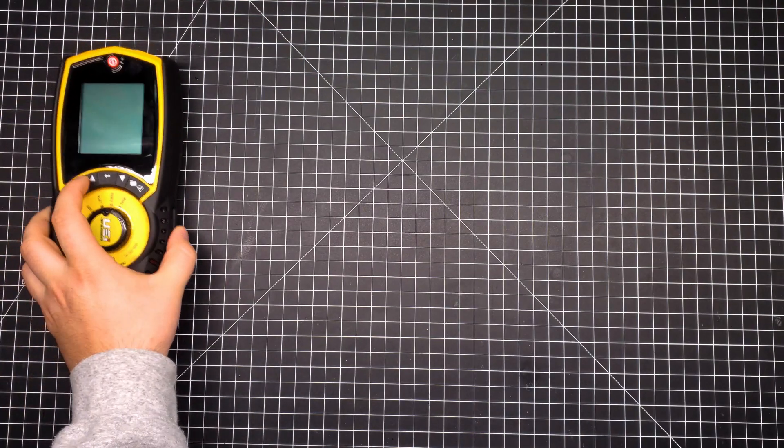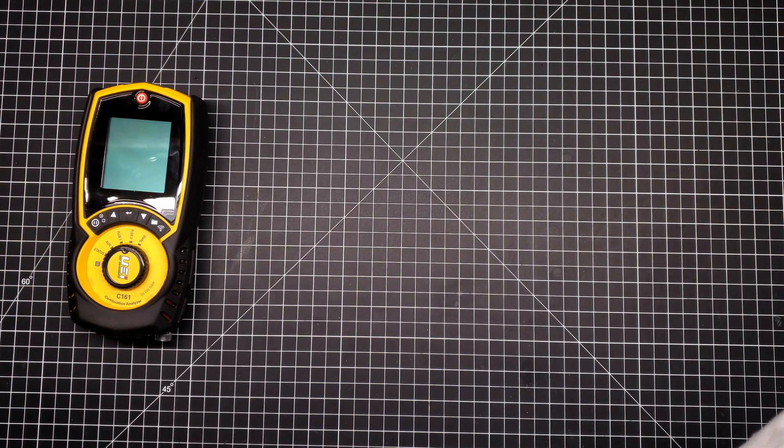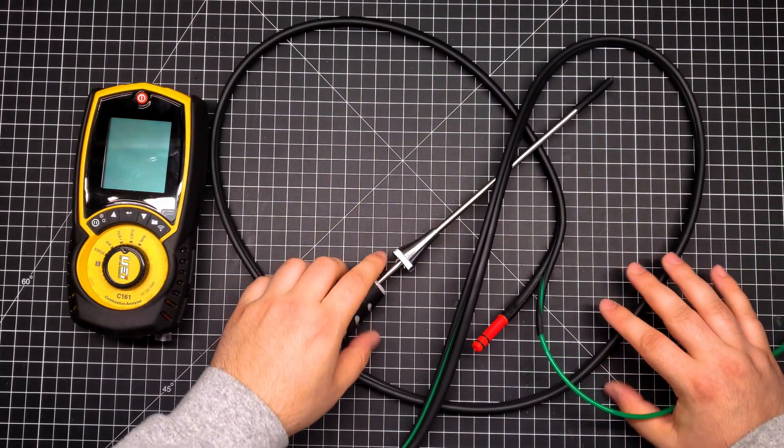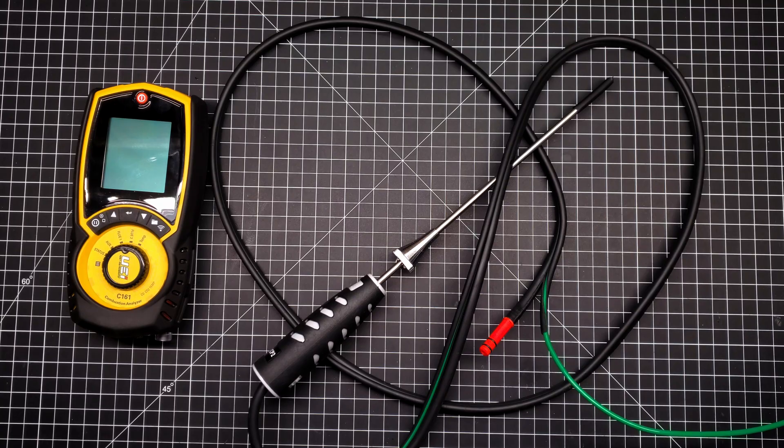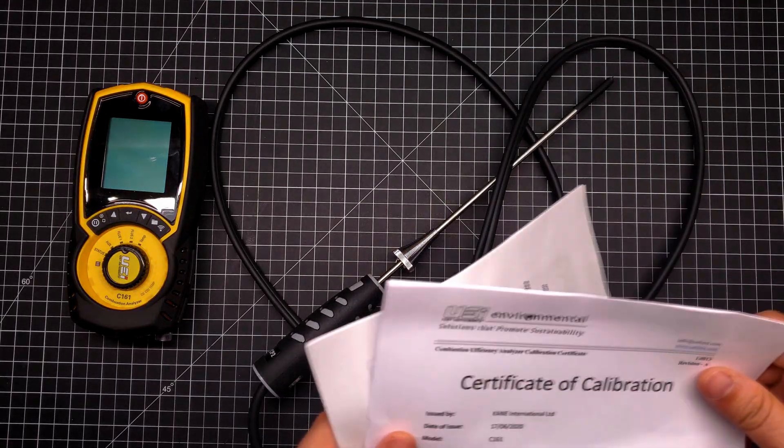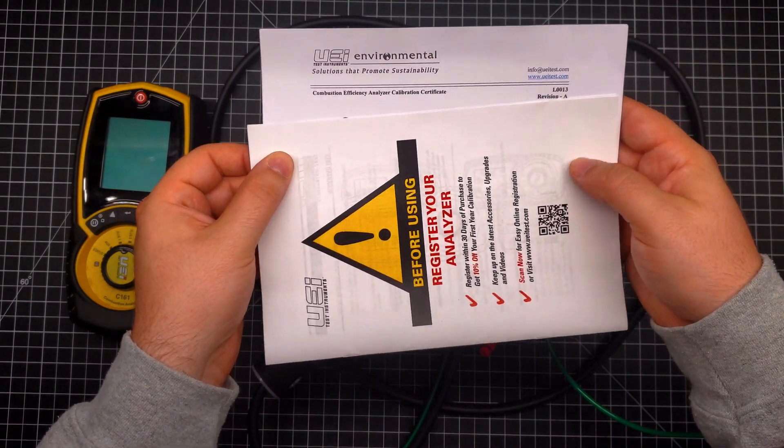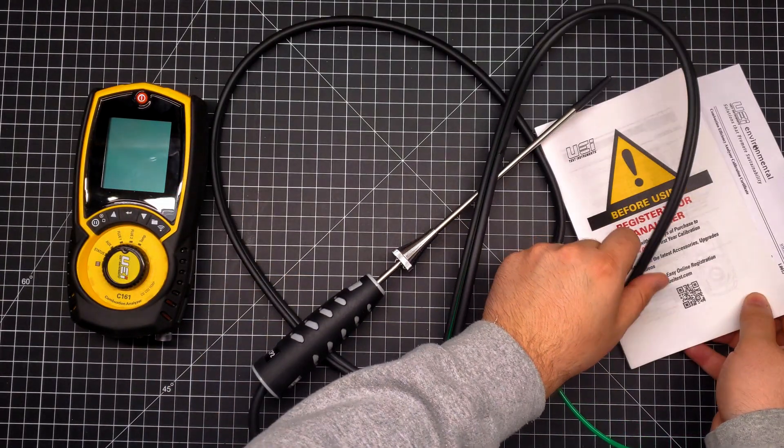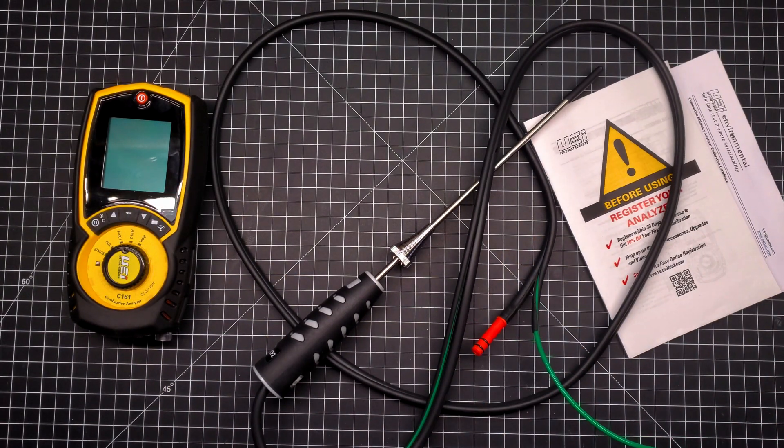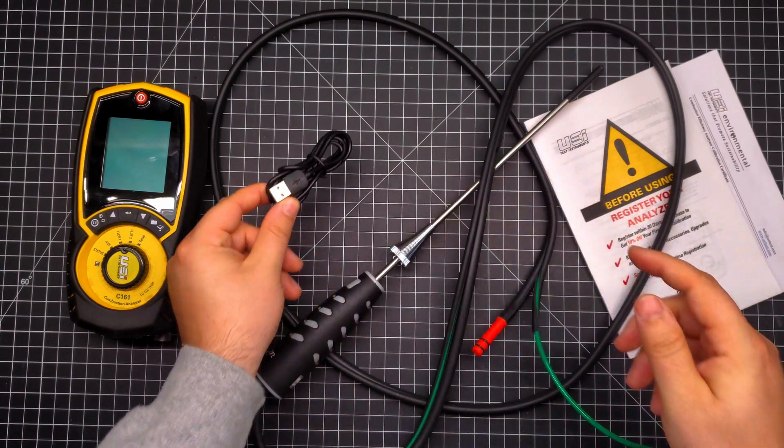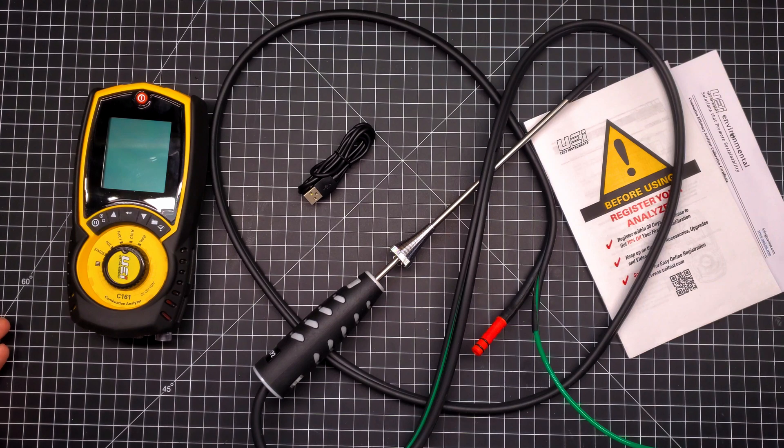So it comes with a certificate of calibration as well as a quick start guide, and it also comes with a micro USB charger. So that's everything that comes in the box of the basic kit.